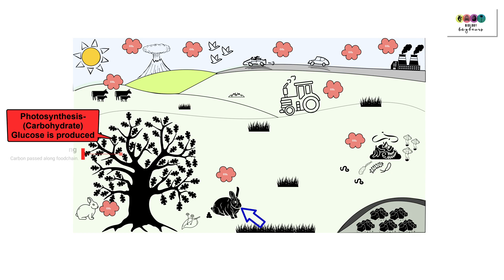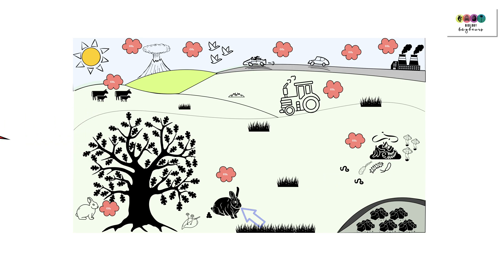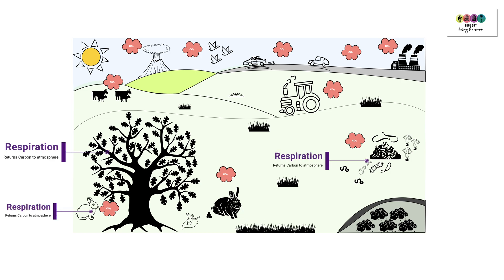This carbon gets passed along the food chain because other animals will eat the plants, and other animals will eat those animals. All living things respire — both plants and animals respire — and this means that carbon is returned to the atmosphere in the form of carbon dioxide through the process of respiration.